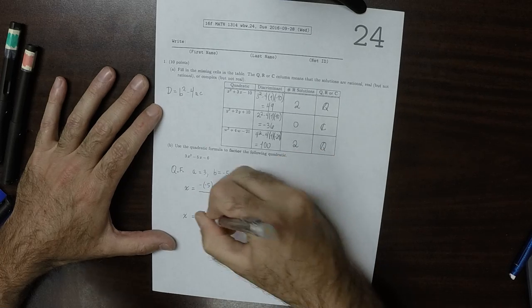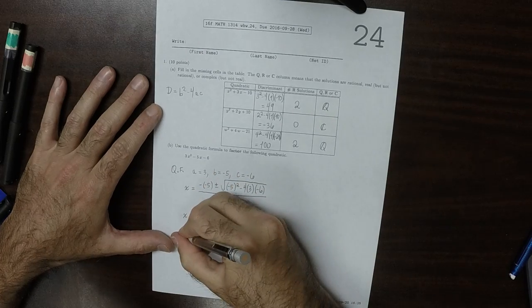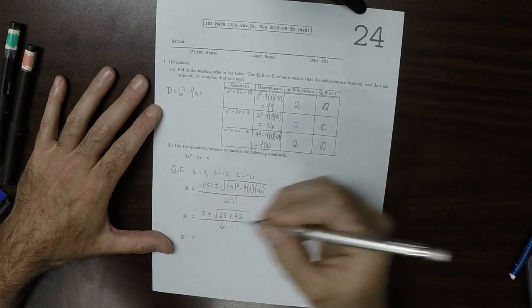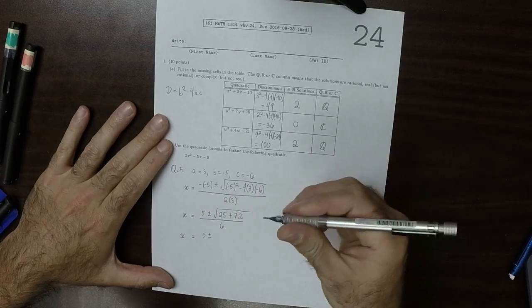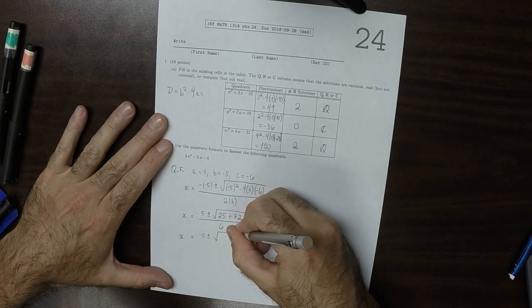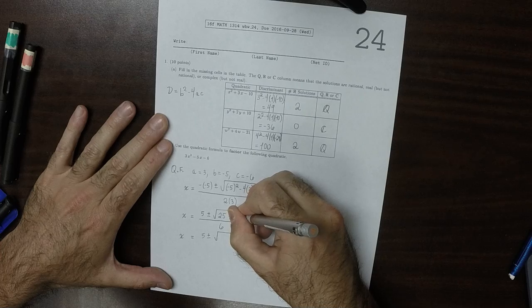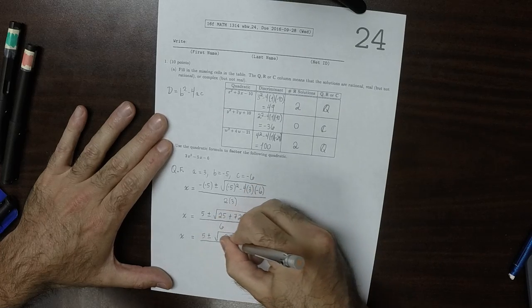And this divided by 6, so x is 5 plus or minus the square root of 97 over 6.